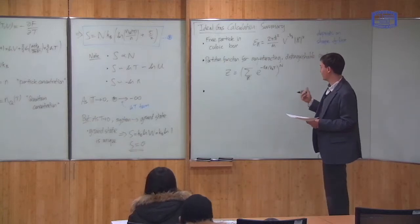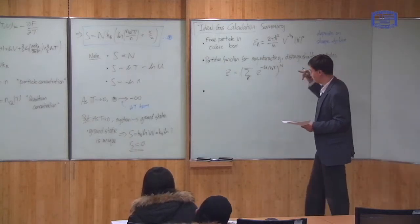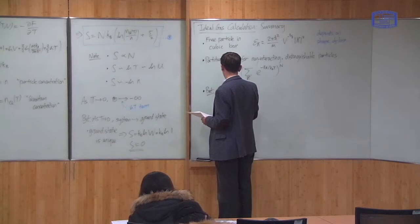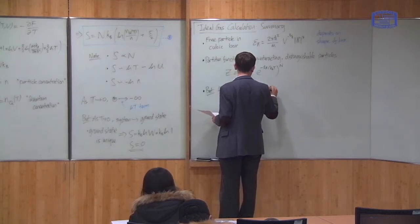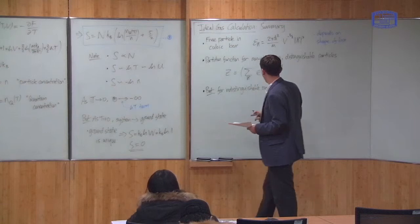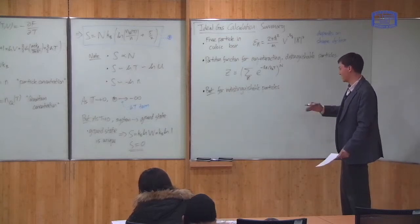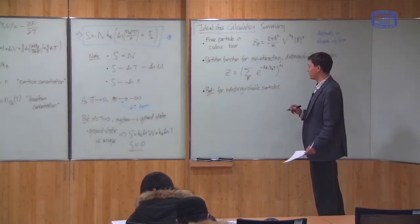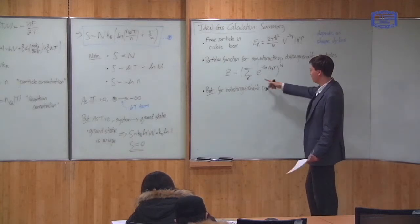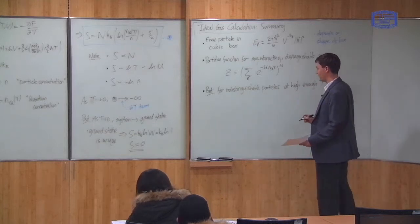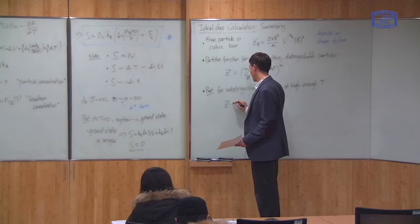But, in a real gas, the particles are indistinguishable. So, the next thing we did was to say that really the particles are indistinguishable. And there, you can't calculate the partition function exactly because the number of microstates depends upon whether the particles can occupy the same state or not, and so on. But, we argued that at high enough temperatures, they should all be in different states, and then we can just divide by n factorial. So, at high enough temperatures, this is the first time we made an approximation, then we can get it just by dividing by n factorial.